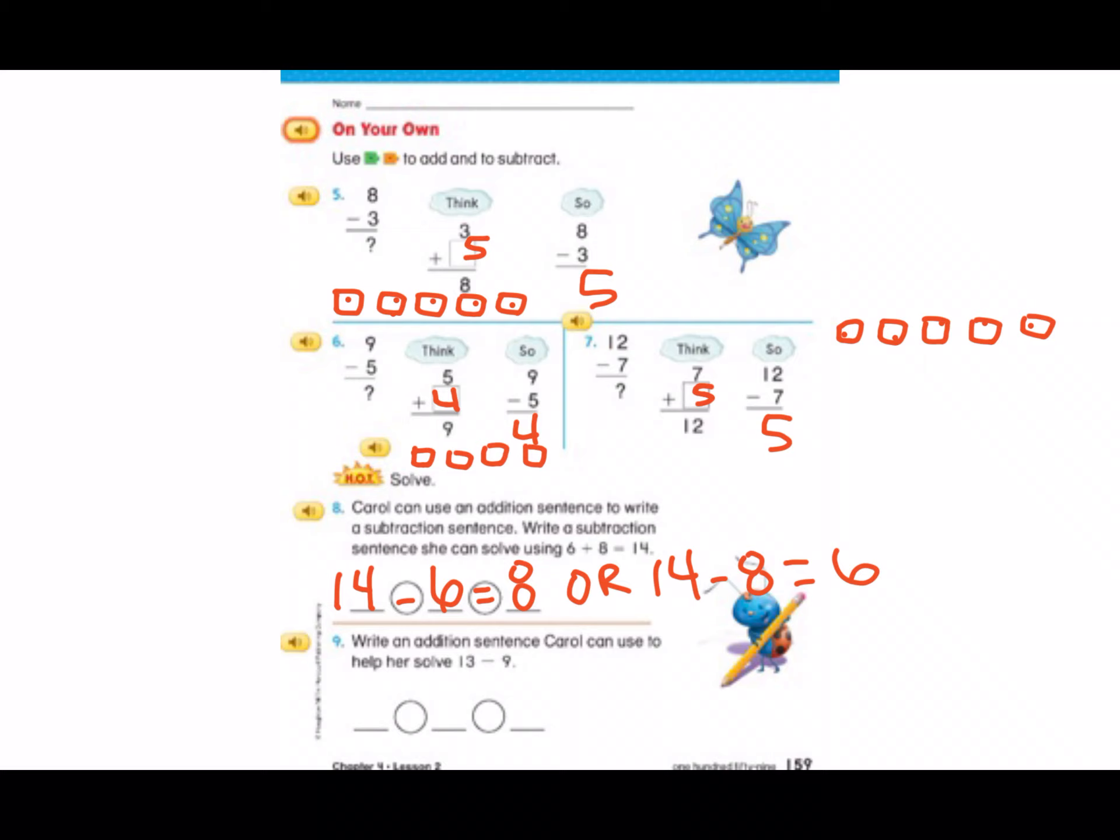So down at the bottom on number 9 it says write an addition sentence Carol can use to help her solve 13 minus 9. So we know that 13 will be our answer and we're adding a number to 9. What number do we need to add to 9? Count on with me. 10, 11, 12, 13. How many more do we need to add to 9? Four. Great job friends.